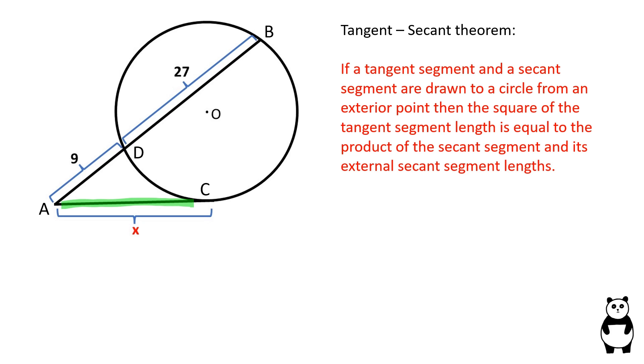If a tangent segment and a secant segment are drawn to a circle from an exterior point, then the square of the tangent segment length is equal to the product of the secant segment and its external secant segment length.